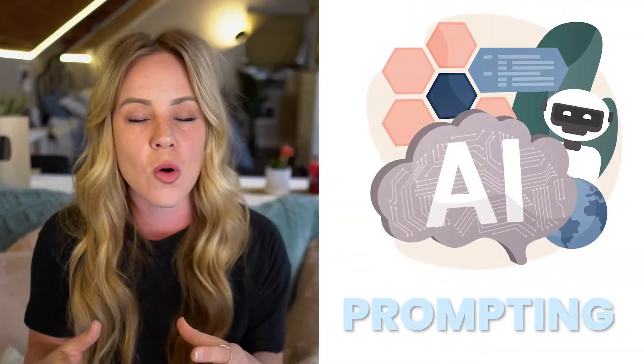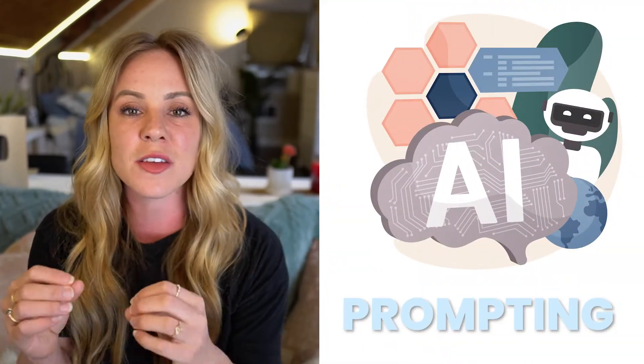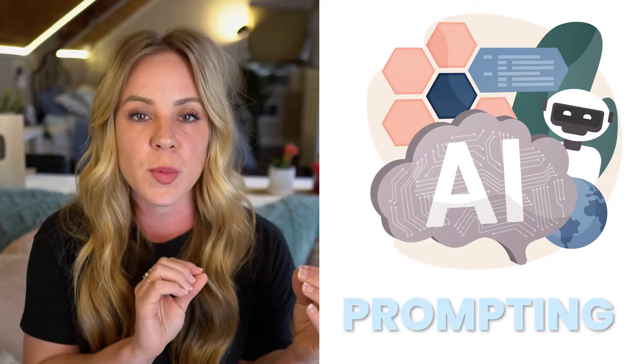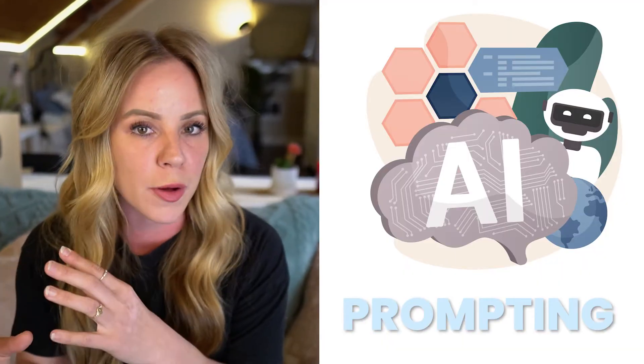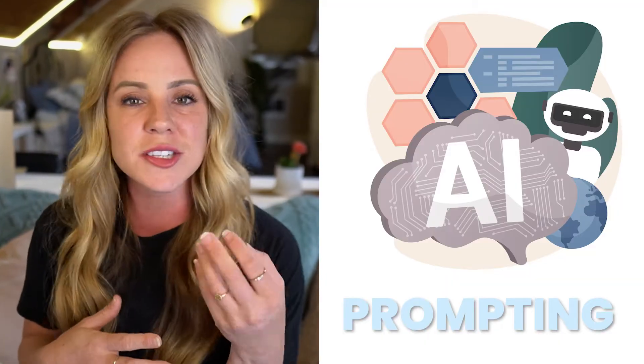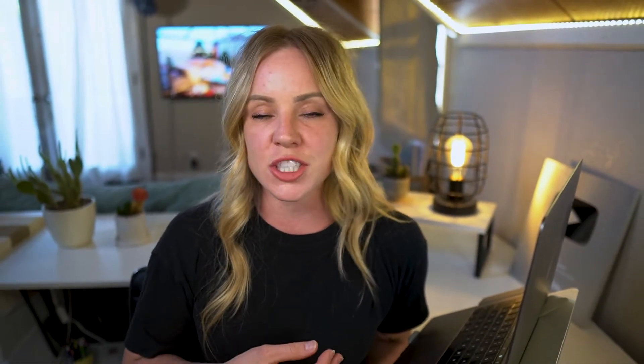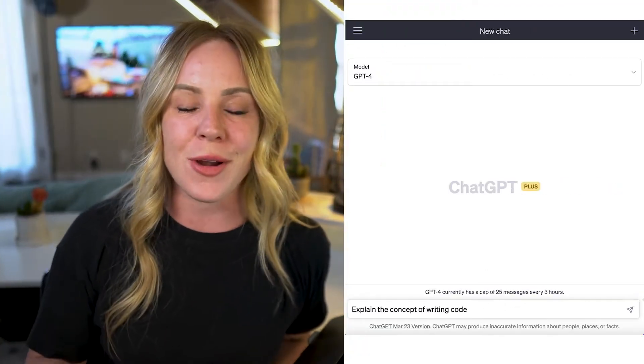The way you communicate with a program like ChatGPT is through prompting. A prompt is what you put into the machine to get the response — it is the input that determines the output. Think of it as marching orders. It can be a question, a command, or even just a statement to get the ball rolling. So let's say you're researching software development, specifically how to write code. You might prompt ChatGPT to simply explain the concept of writing code.